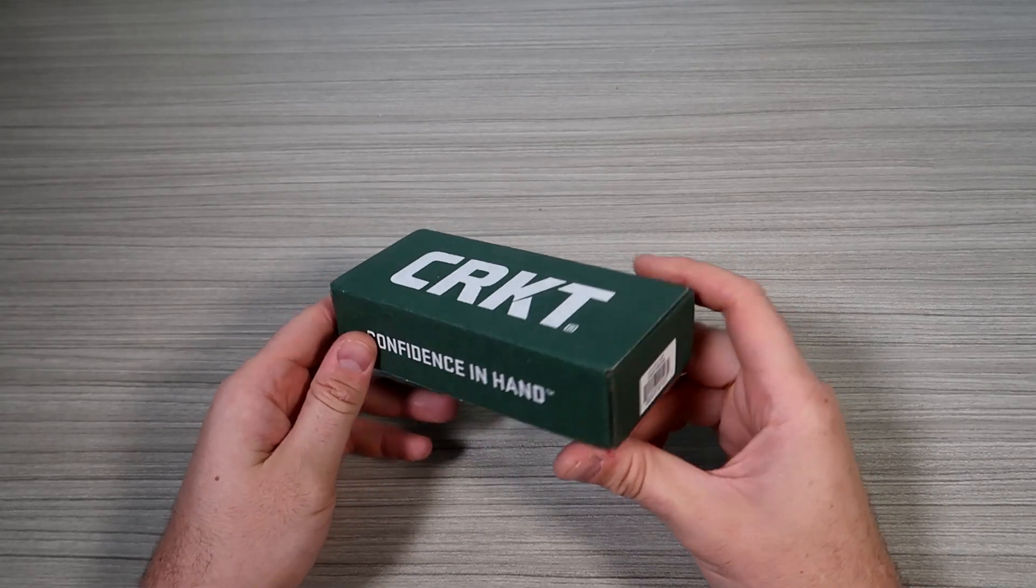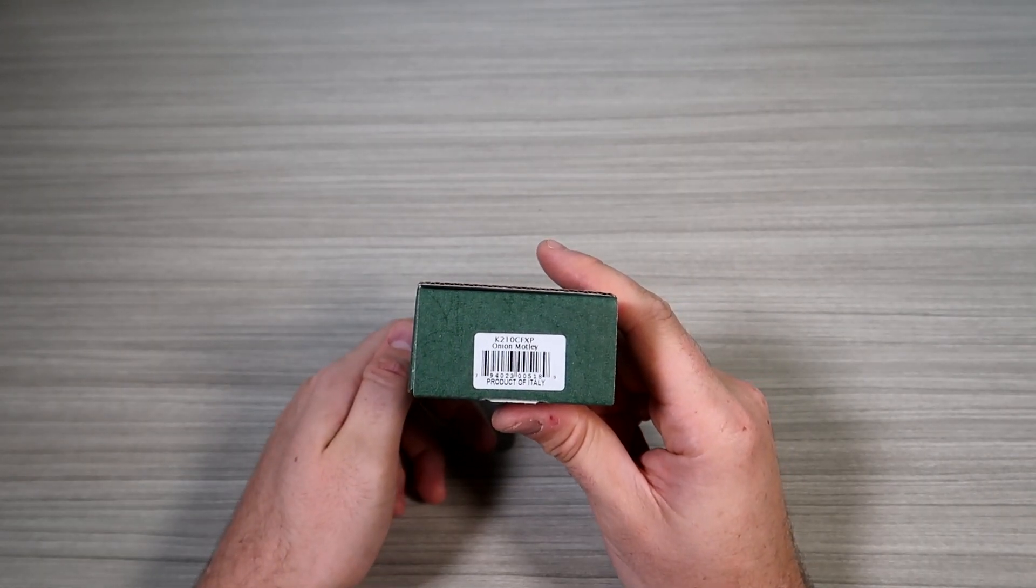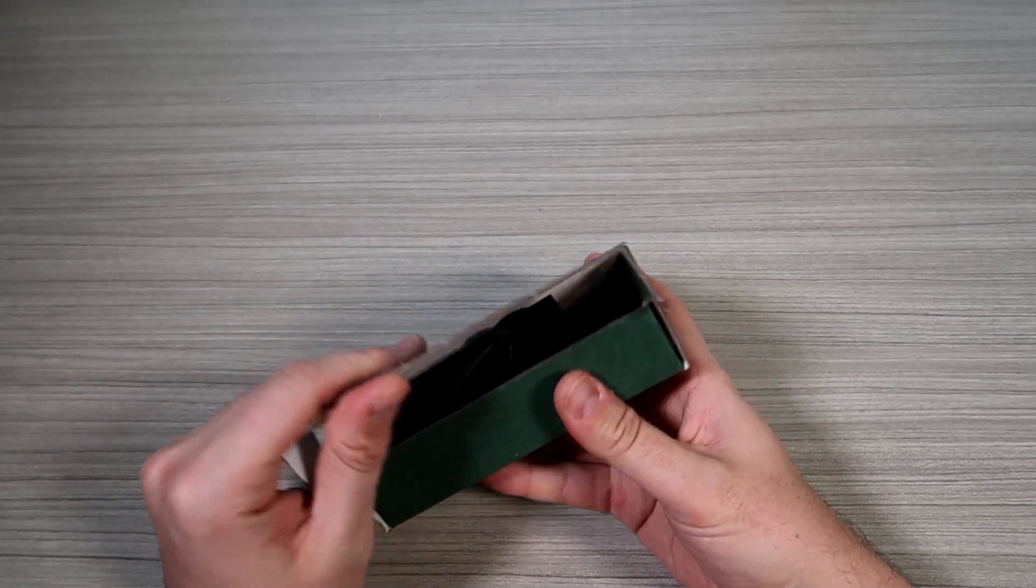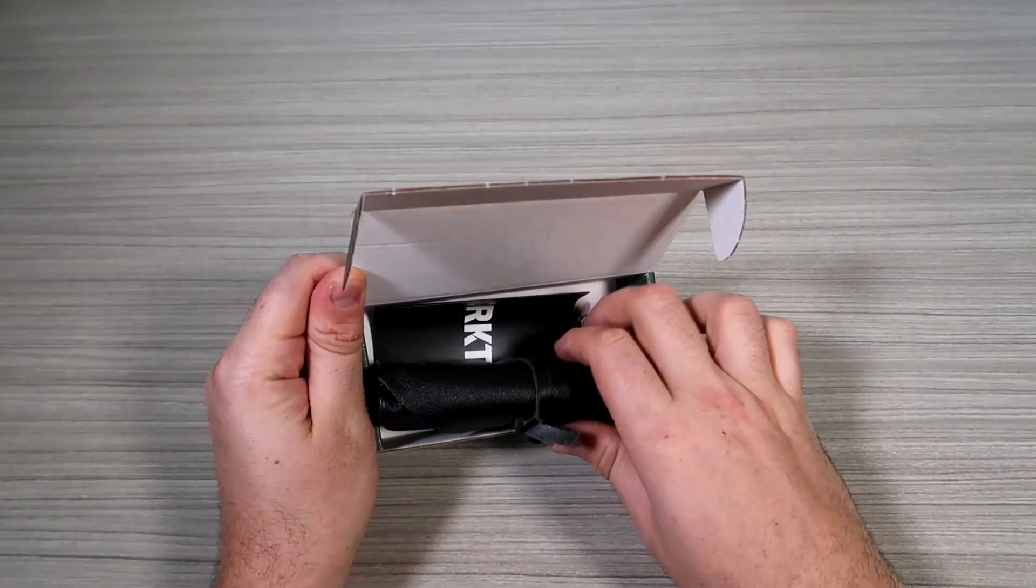This right here, Serker T Onion Muttlee. This is a $425 knife right here. So let's see what it's all about.